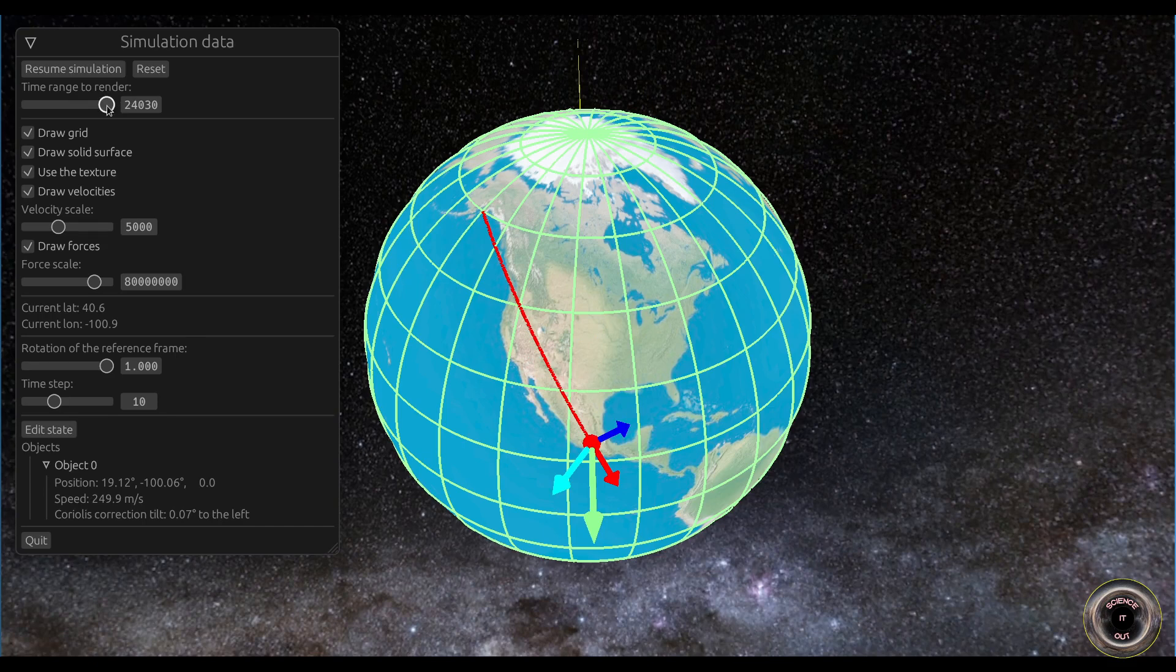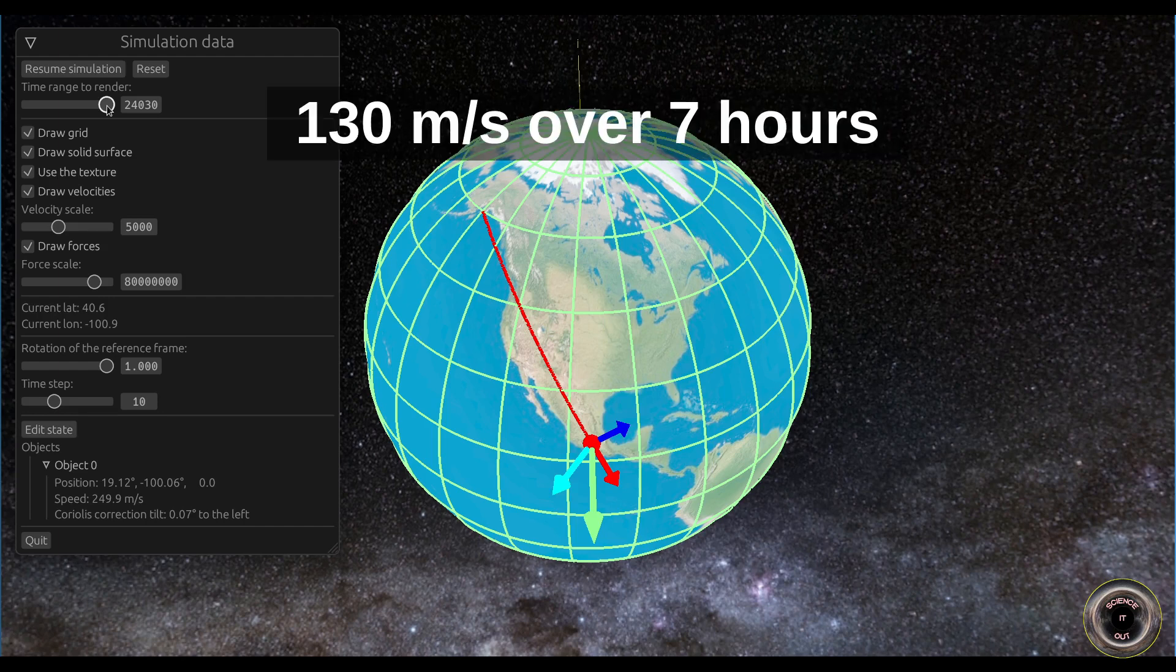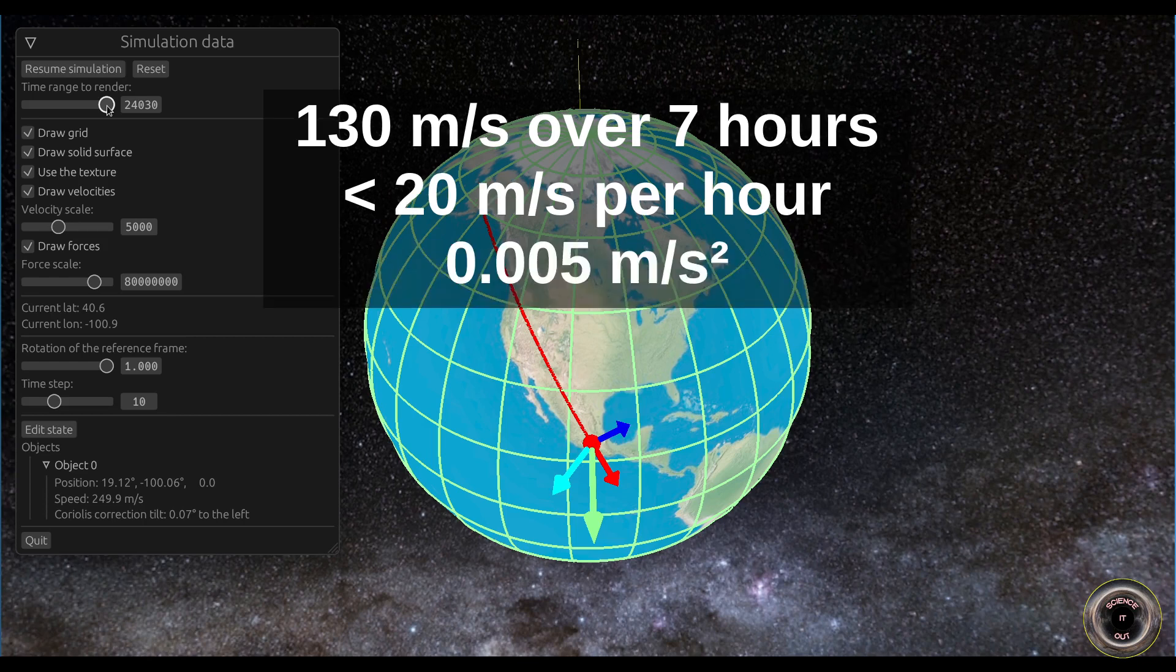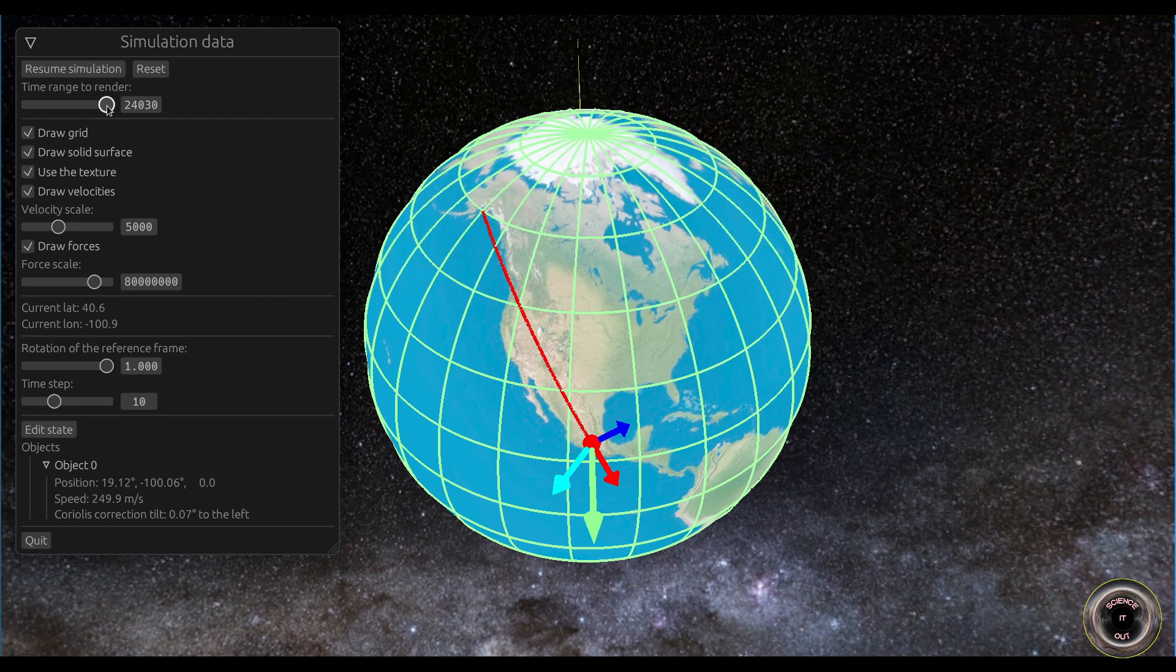But wait, if it's so small how can it make the plane gain so much speed? Is it that much though? It gains about 130 meters per second over 7 hours. That's less than 20 meters per second per hour on average, or 0.005 meters per second squared. It's less than one thousandth of a g. The Coriolis correction force is actually larger than this value, but it's because it isn't parallel to velocity. In the rotating frame it's always perpendicular to velocity, so it doesn't change the speed at all. In the inertial frame, however, the velocity has a slightly different direction, and so this force, which is in the same direction, has a component parallel to it. It is this component that is responsible for the change in speed.